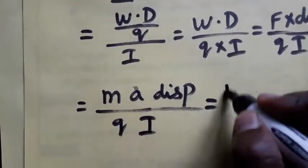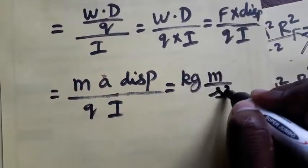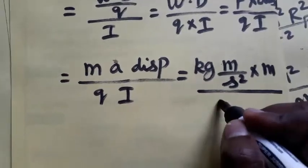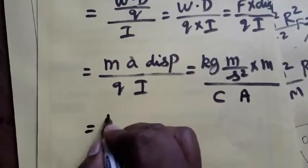So mass we know is kg, acceleration we know is meter by second square, displacement we know is meter, divided by charge we know is coulombs, current we know is ampere.